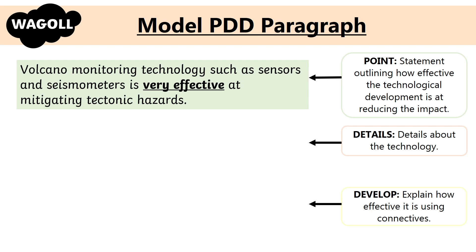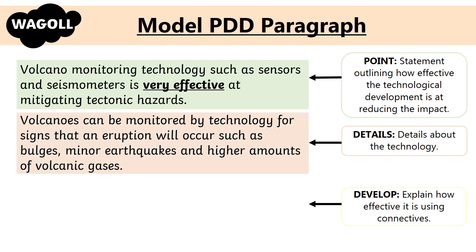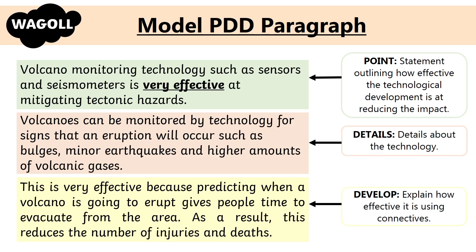In this point we have stated the technological development and how effective it is. We can then give details: volcanoes can be monitored by technology for signs that an eruption will occur, such as bulges, minor earthquakes and higher amounts of volcanic gases. We can then refer back to our judgment — very effective — to explain why, using connectives. For instance: this is very effective because predicting when a volcano is going to erupt gives people time to evacuate from the area. As a result, this reduces the number of injuries and deaths. In this development there are two connectives: because and as a result.